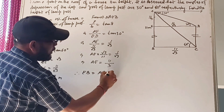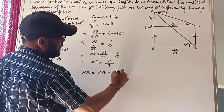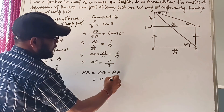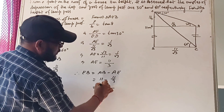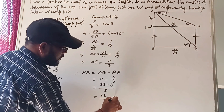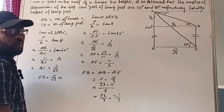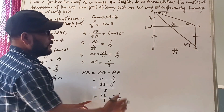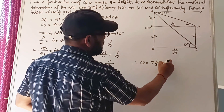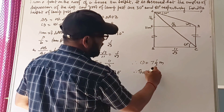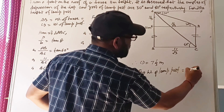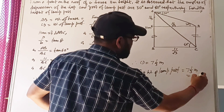EB = AB minus AE = 11 minus 11/3 = (33 - 11)/3 = 22/3 = 7 and 1/3 meters. Therefore, CD equals 7 and 1/3 meters, so the height of the lamp post is 7⅓ meters.